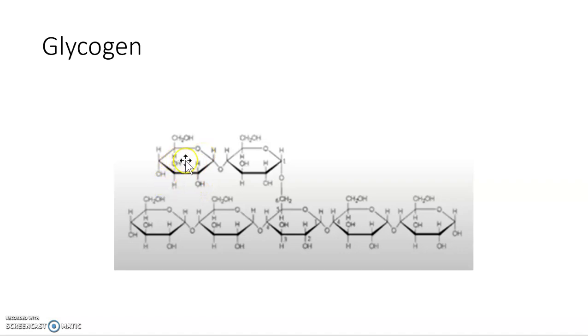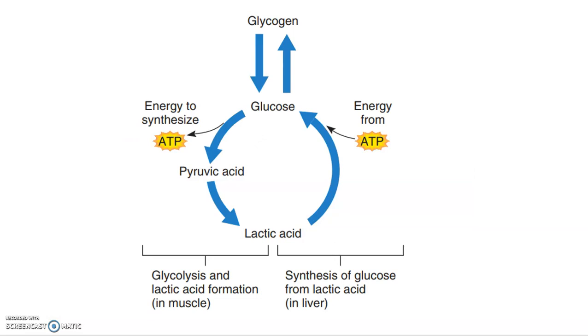There are many more glycogen than there are glucose, as you can see. Glycogen are branched chains of glucose, and as glycogen is broken down, it becomes glucose.